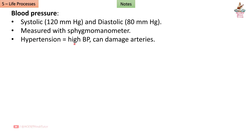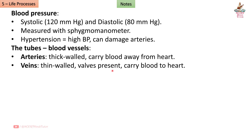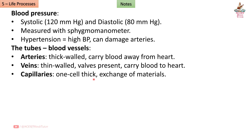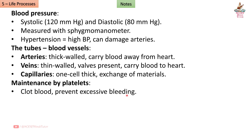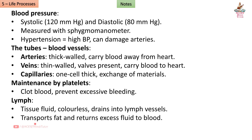Blood pressure: systolic 120 mmHg and diastolic 80 mmHg, measured with a sphygmomanometer. Hypertension (high BP) can damage arteries. Blood vessels: arteries have thick walls and carry blood away from the heart; veins have thin walls with valves and carry blood to the heart; capillaries are one cell thick and are the site of material exchange. Lymph is a colourless tissue fluid that drains into lymph vessels, transports fat, and returns excess fluid to the blood.